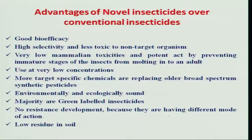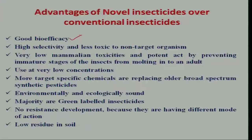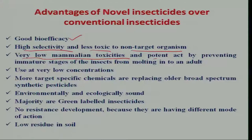We now need to understand the novel advantages of these novel insecticides over conventional insecticides. All these new molecules have better efficacy with a very high mortality factor. They have high selectivity and are less toxic to non-target organisms, particularly parasitoids and predators. They have very low mammalian toxicity and act potently by preventing the immature stages of the insect from molting, interfering in various developmental stages and the molting process. They are also used at very low concentrations.